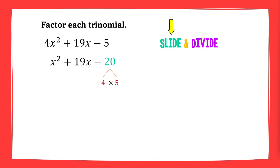Let's try negative 4 and 5 — does it give you a sum of 19? No. So we try another pair of factors. How about negative 1 and 20? Yes, it does give you a sum of 19.